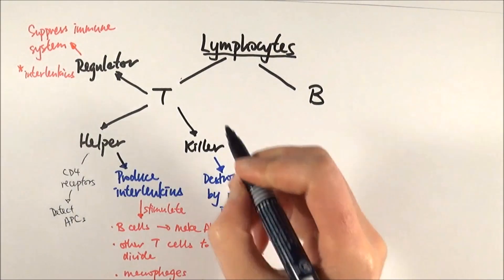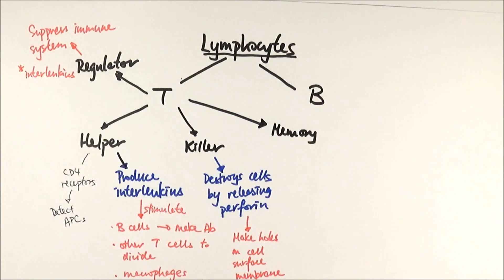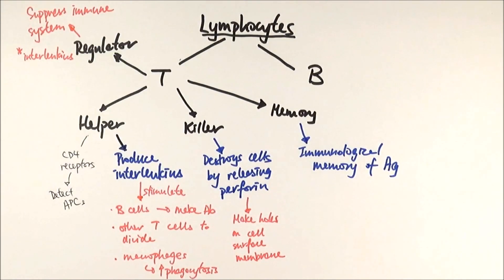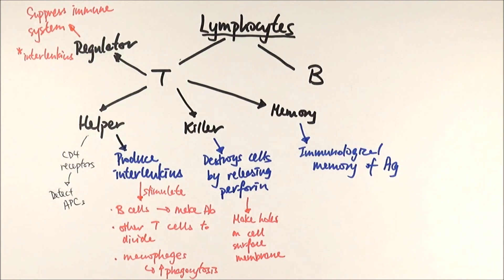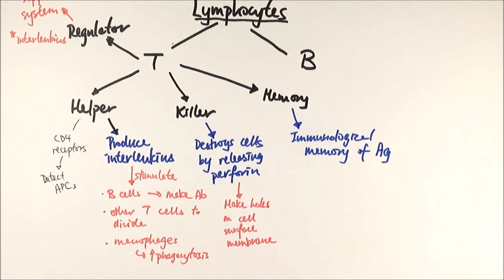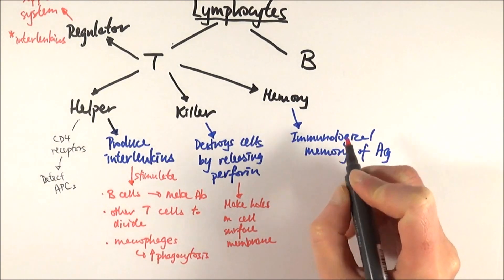Finally, we have T memory cells. T memory cells lead to immunological memory of the antigen we're currently dealing with. Like the T regulator cell, T memory cells aren't critical during the immediate immune response, but if the same pathogen attacks again, they can very quickly recognize that antigen and produce a rapid secondary response — coordinating the immune response before the pathogen actually makes us feel symptoms.